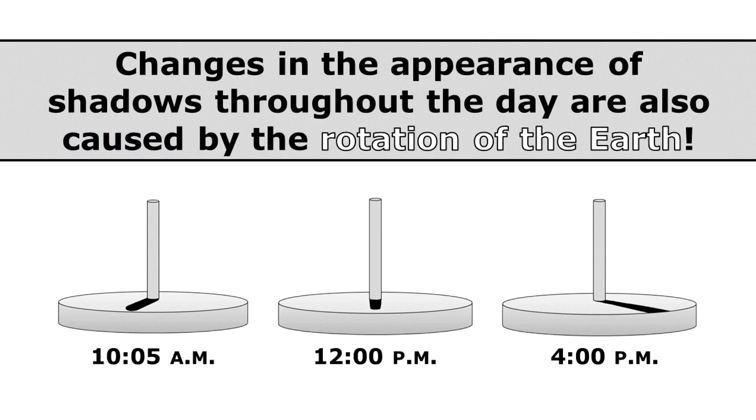Changes in the appearance of shadows throughout the day are also caused by the rotation of the Earth. The apparent motion of the Sun and the changing of the shadows, which are related, are both evidence that the Earth is rotating.